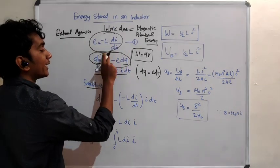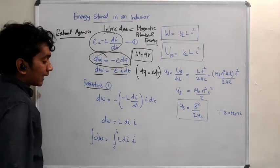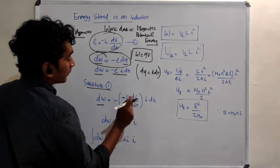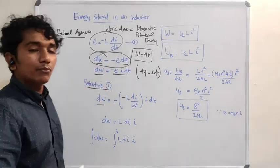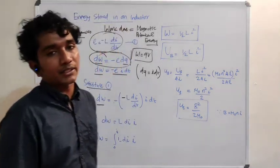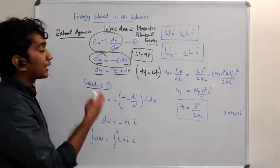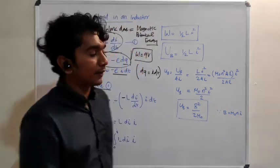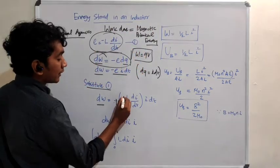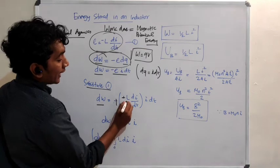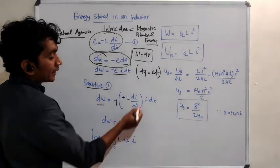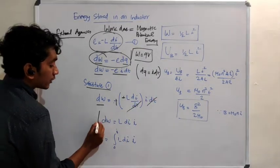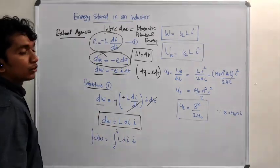Substituting the EMF equation, DW = minus of (minus L times dI/dt) times I·dt. The minus sign is there because inductance opposes the current — we are doing work against that opposition. So minus of minus gives plus, and dt cancels, leaving DW = L·I·dI.